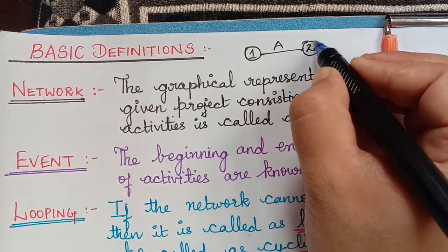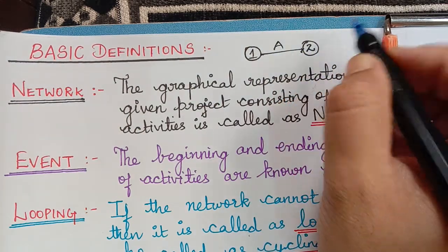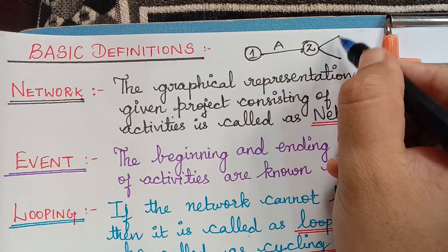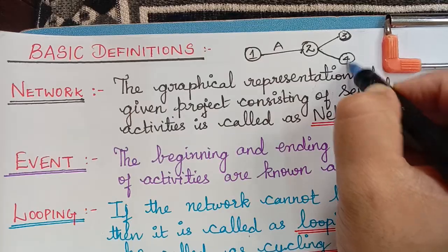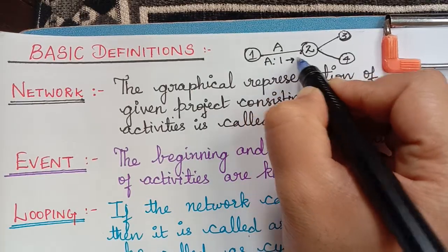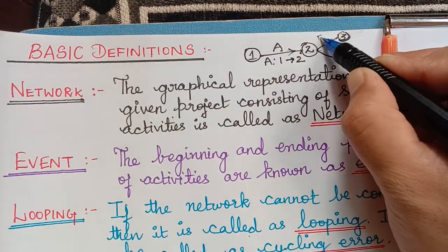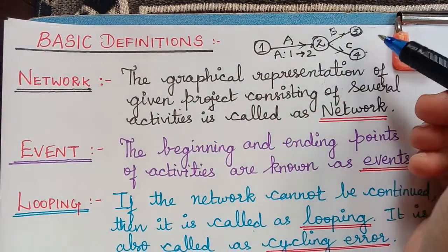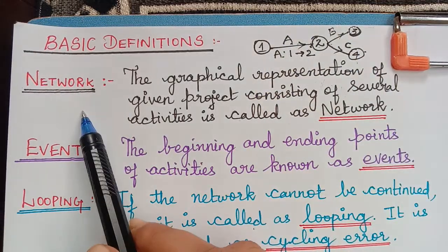After completing activity A, we move on to the next activity. We can also have two activities simultaneously, since we can carry out some parallel activities as well. The other nodes will be node 3 and node 4. Activity A is from node 1 to 2. We have an arrow diagram, and activity 2 to 3 can be represented as B, and activity 2 to 4 can be represented as C. So drawing a graphical representation for the activities is known as a network.